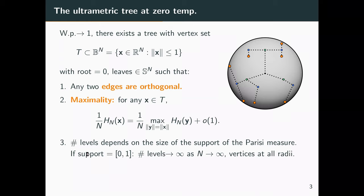And secondly, this is relevant to the optimization problem because we are interested in maximal points with maximal energy. Any point on the tree, any of the vertices, the energy at any of the vertices is maximal over the sphere of the same radius. Lastly, the number of levels in this tree depends on the size of the support of the Parisi measure. So in this picture, this is the so-called three-step replica symmetry breaking where you have the depth of the tree is three.